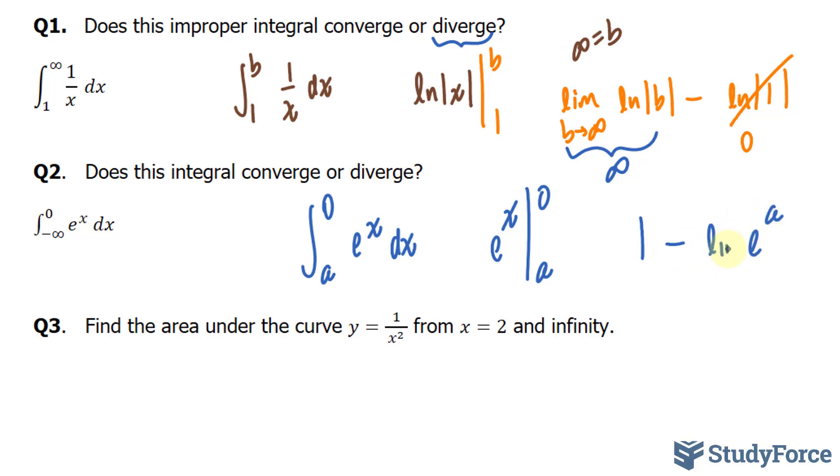And if I evaluate it at a, I need to take the limit as a approaches negative infinity. And if I put a very small number into a, I'll end up with e to the power of a very small number, very small negative number, which will eventually lead to 0. So the limit of this is equal to 0. A finite value. 1 minus 0 is 1. Therefore, this integral converges.